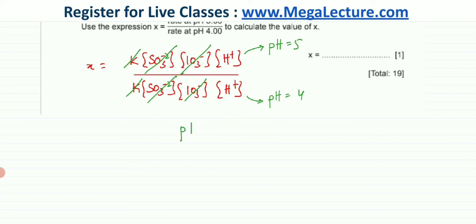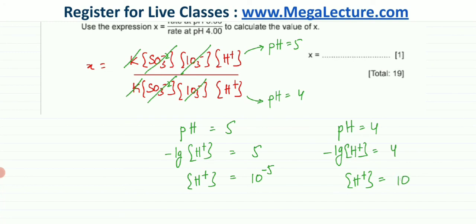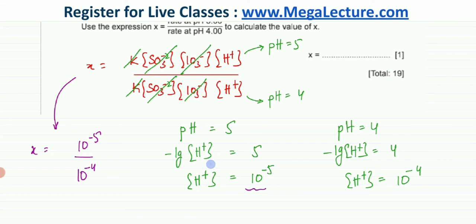If pH = 5, then using pH = −log[H⁺], we get [H⁺] = 10⁻⁵. If pH = 4, then [H⁺] = 10⁻⁴. So x = 10⁻⁵ / 10⁻⁴ = 10⁻⁵⁺⁴ = 10⁻¹, which equals 0.1. That is the value of x.